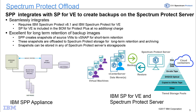Offloading Spectrum Protect Plus images to Spectrum Protect gives us a way to do long-term retention for those backup images. We're able to seamlessly integrate the Spectrum Protect Plus environment with the Spectrum Protect for Virtual Environments and Spectrum Protect Server. Snapshots from Spectrum Protect Plus are sent to the Spectrum Protect Server environment, and you can choose whether that destination is tape, cloud, VTL, or disk, retaining those images for longer term.